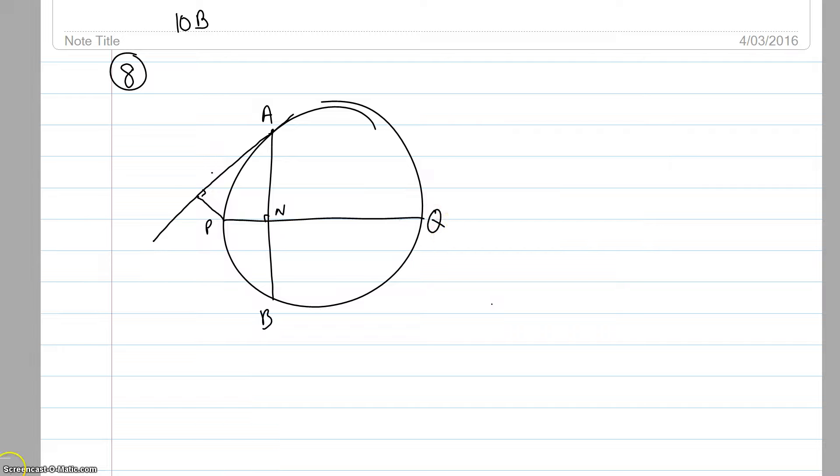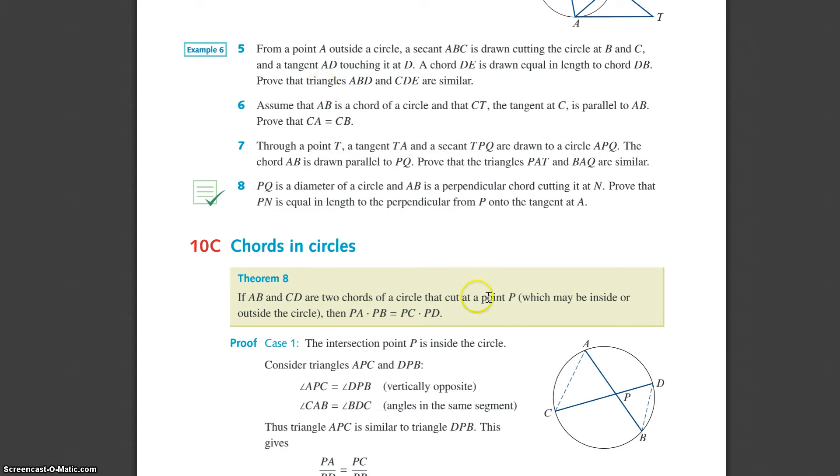and it also has a chord cutting it at some point, and the intersection is N and it's perpendicular at that point, so I've got this chord A to B, and then it also says that there's a tangent. Let's just get the question up. Here we go.